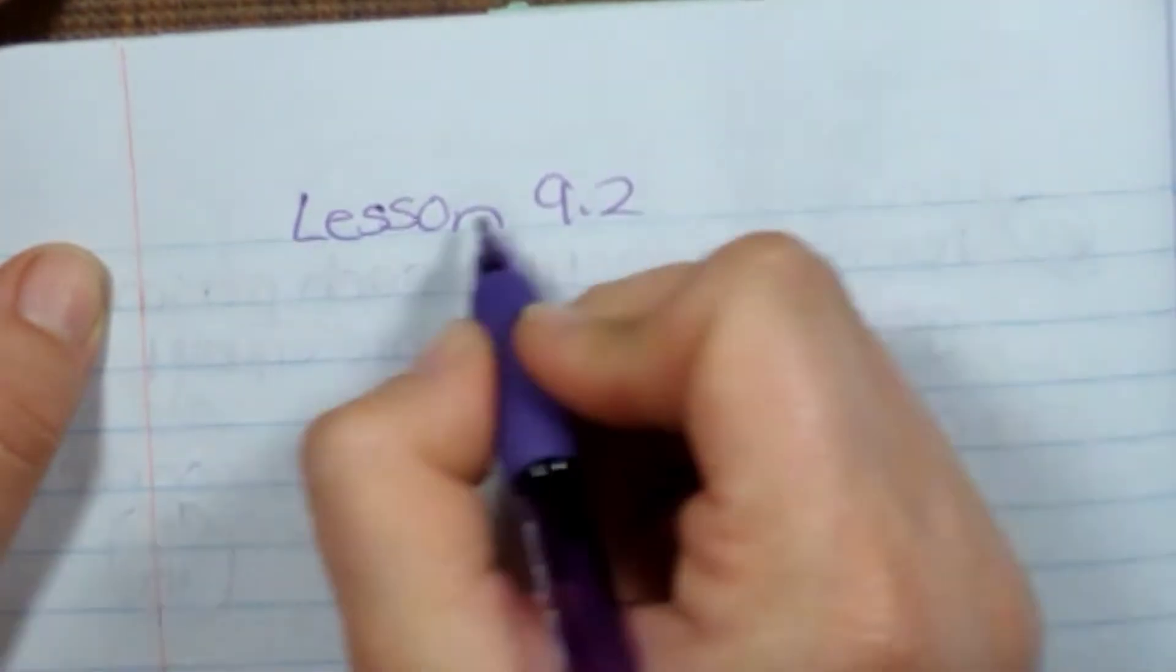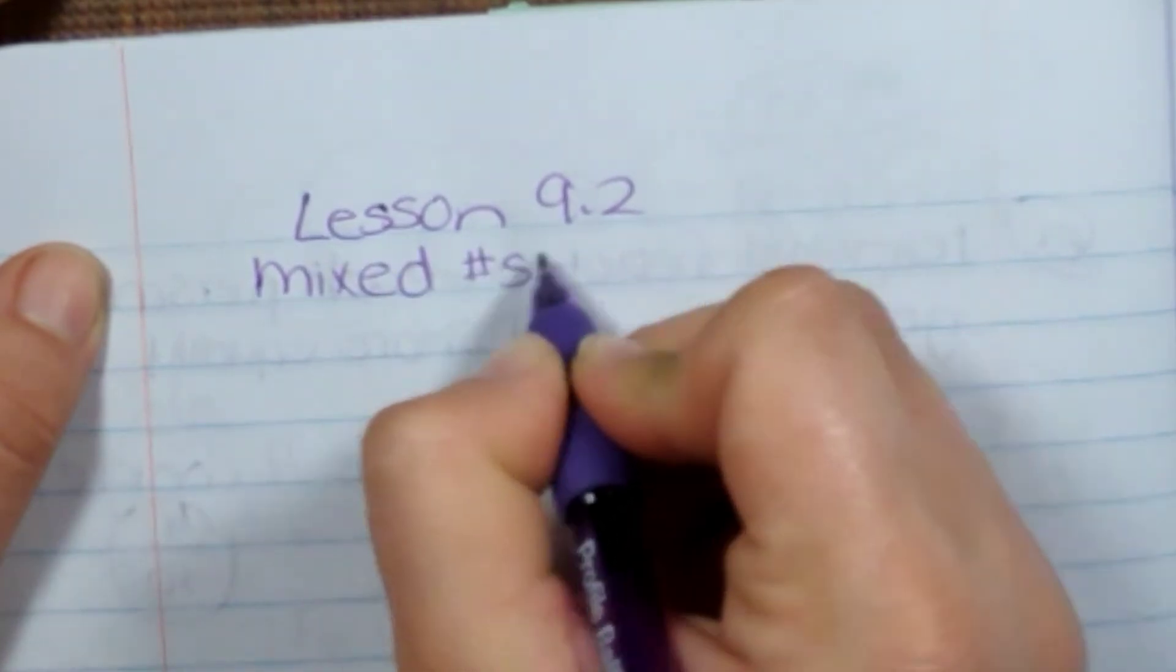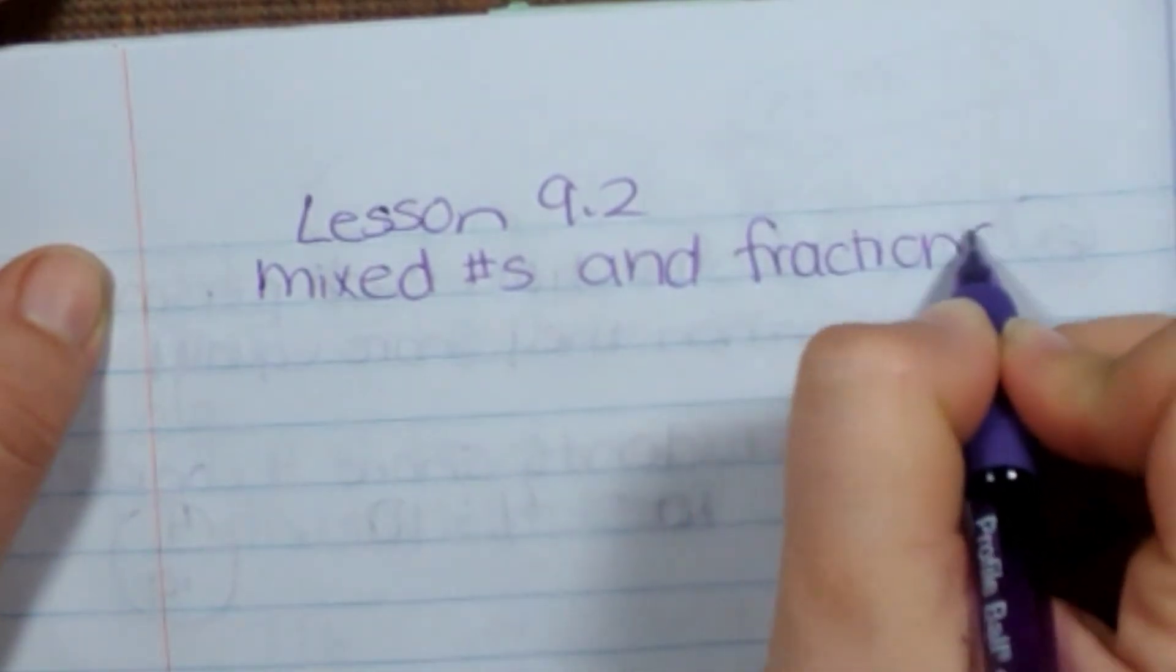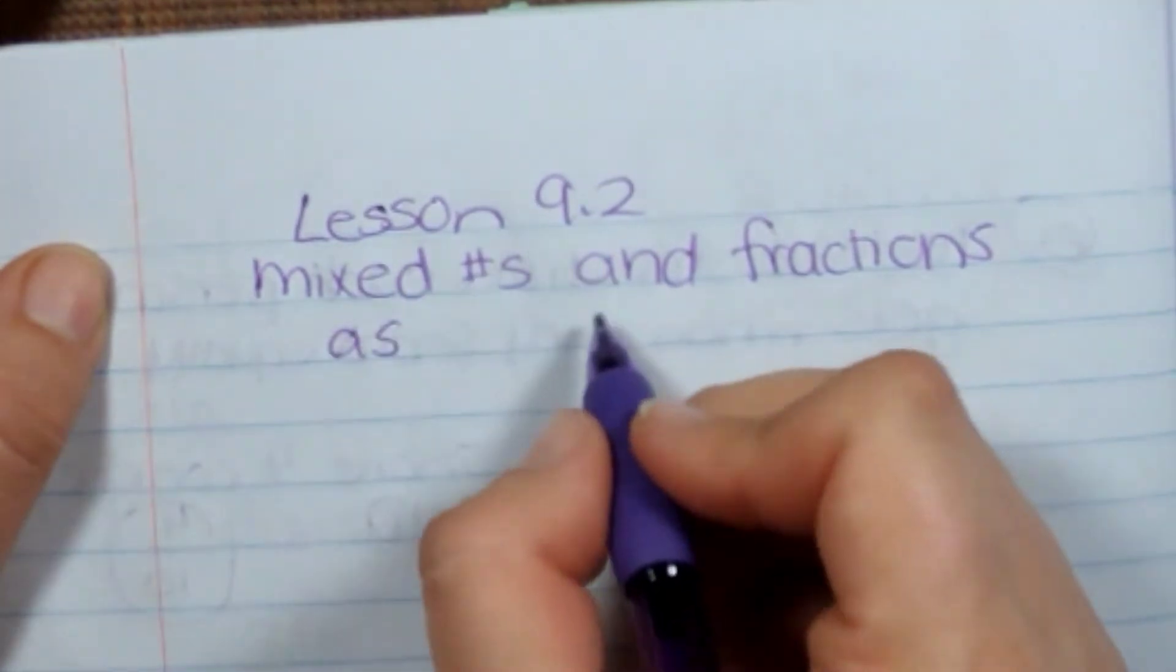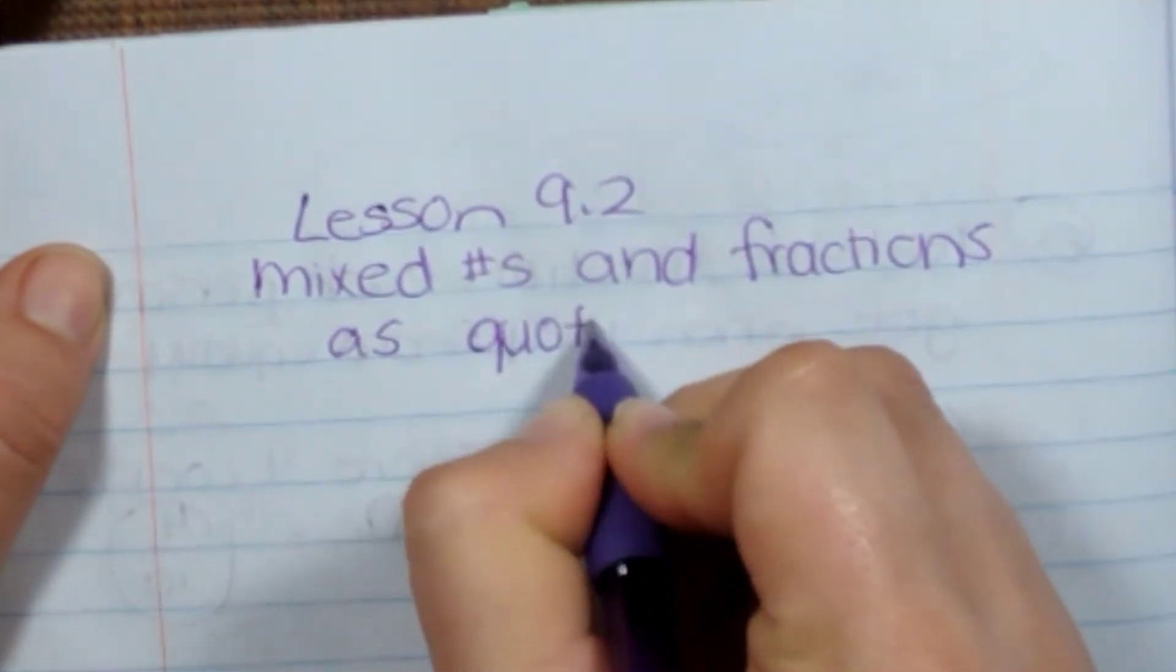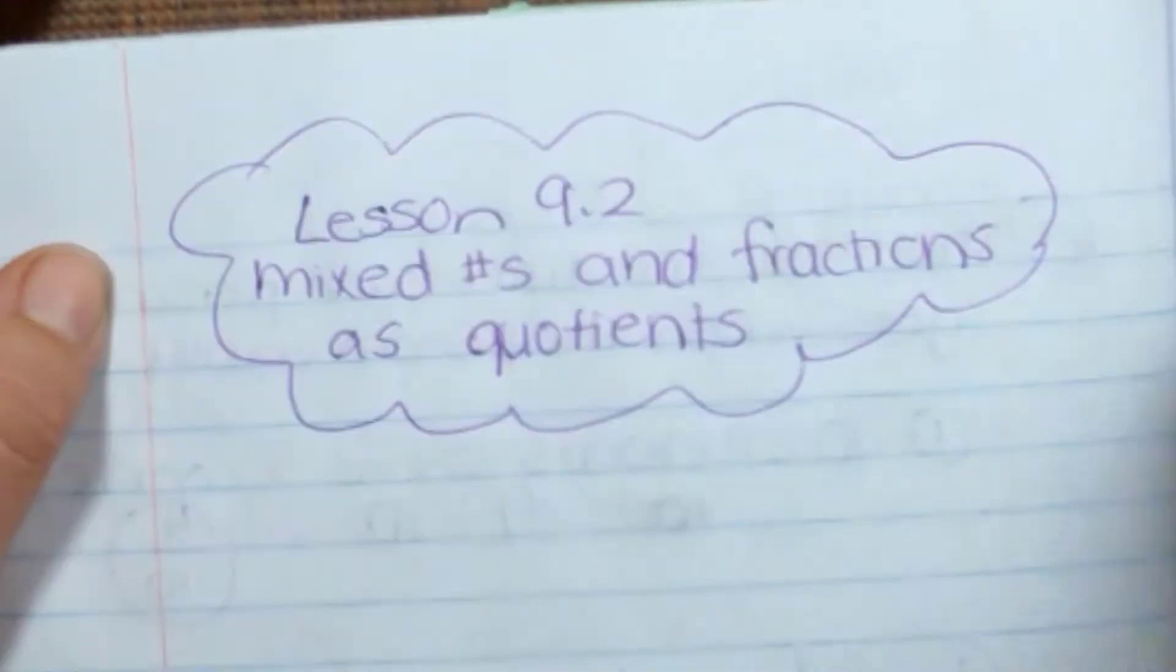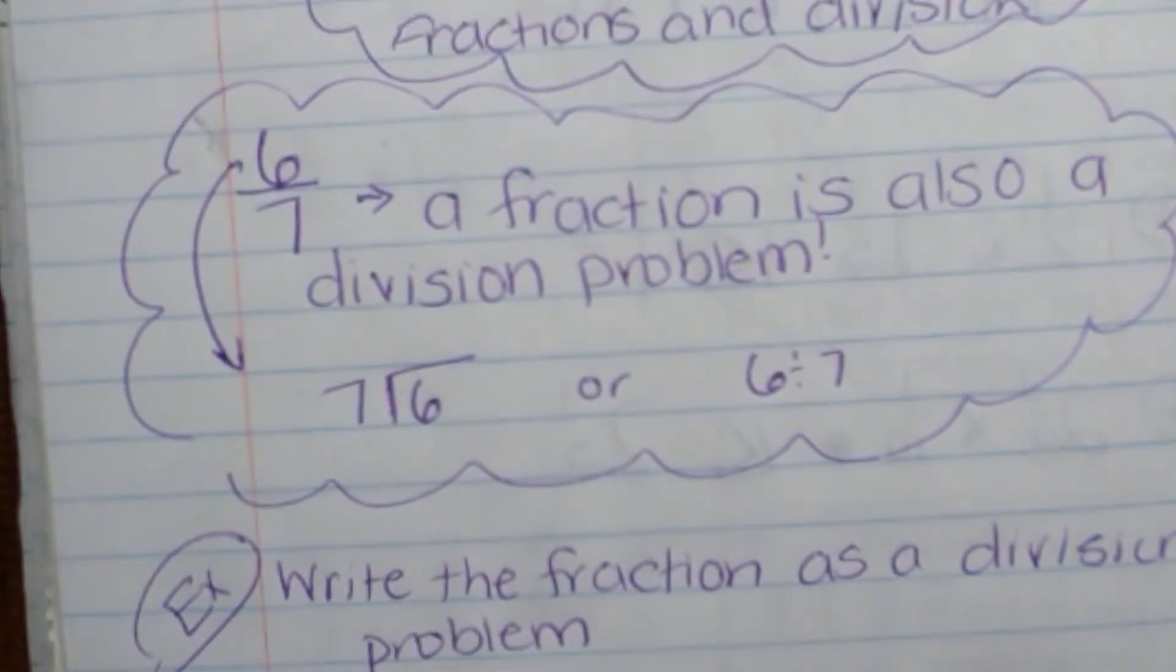So we're going to do lesson 9.2 with mixed numbers and fractions as answers. Quotients. Those are answers to our division problems. I'm not going to be telling you how to set up the problems because we've already learned that. I'm going to be showing you how to solve.